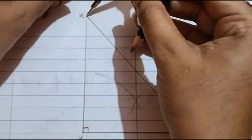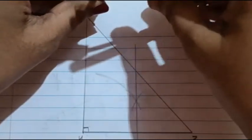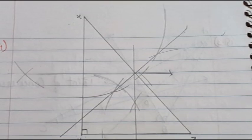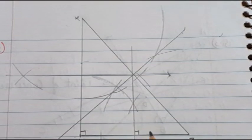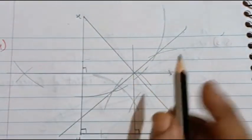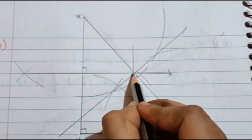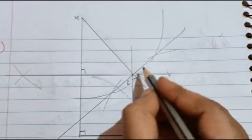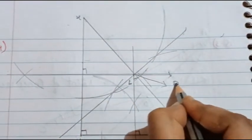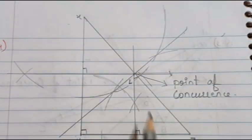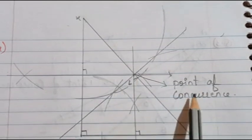The next side is XZ. I will take more than half and draw the arcs. Now I have completed the diagram. I have bisected the first side YZ — this is its perpendicular bisector line. Then I bisected XY and drew its perpendicular line. Then I bisected XZ and drew its perpendicular line. All three perpendicular bisectors intersect at one point, which I will name as point L. This point L is known as the point of concurrence.